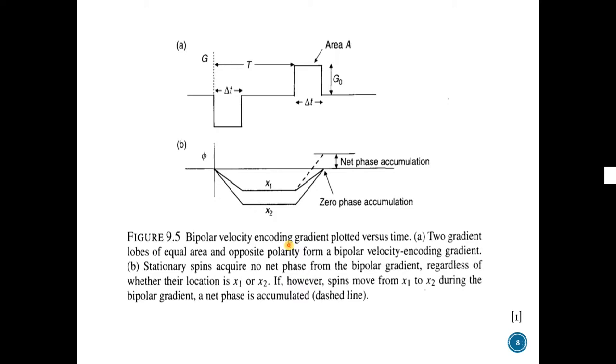Here is another figure. In this figure, let's assume there is a spin at position X1 and another spin at position X2. For spins at position X1 and X2, there will be no phase accumulation at the end of bipolar gradients. However, if a spin is moving from X1 to X2, it will follow the dotted line and there will be phase accumulation after the bipolar gradients are applied.